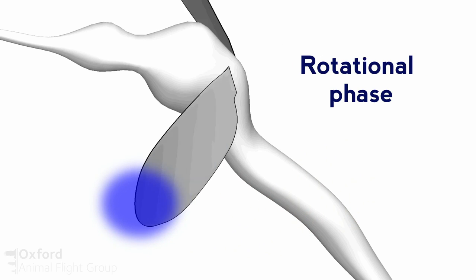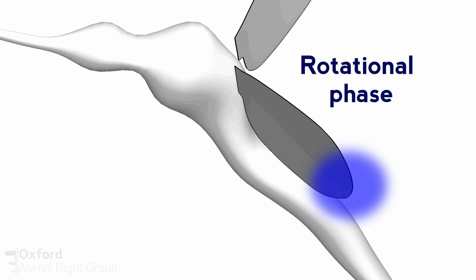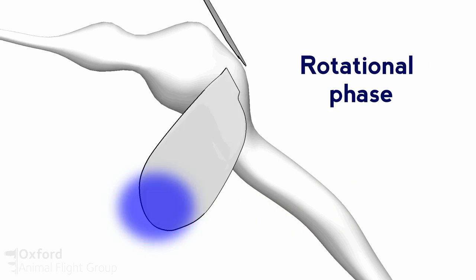Now the reason why this is really interesting is that most insects produce their peak lift forces on what's called the translational part of the wing beat. And this is the phase of the wing beat where the wing is essentially just moving along in a straight line.